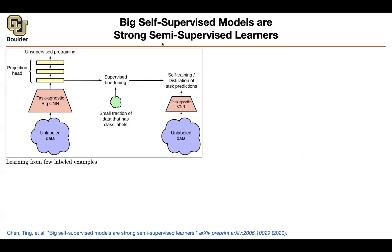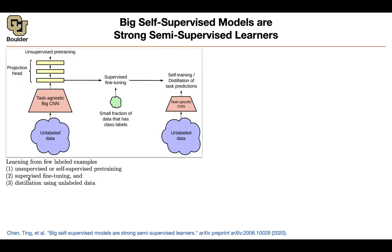The idea of semi-supervised learning is that you want to learn from a few labeled examples. Here's one method: do your unsupervised or self-supervised learning — perhaps contrastive learning — train a large CNN using your unlabeled data, and then do supervised fine-tuning. You take that model and adjust its parameters on your supervised data, the small portion that is actually labeled.